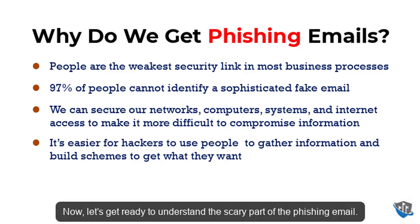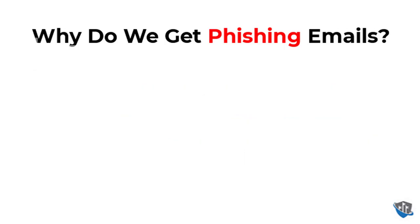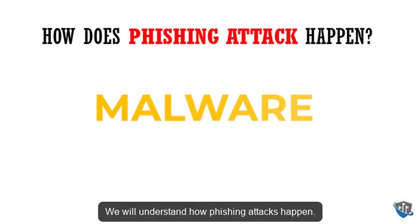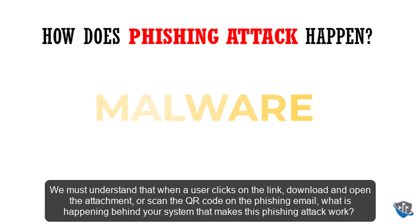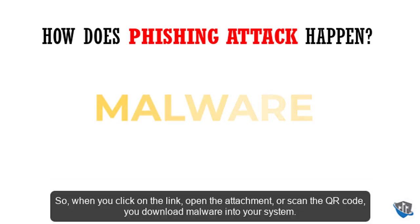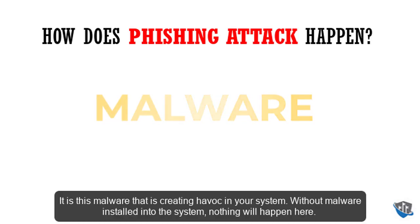Now let's understand the scary part of phishing email — how phishing attacks happen. When a user clicks on a link, downloads and opens an attachment, or scans a QR code on a phishing email, malware is downloaded into your system. It is this malware that creates havoc in your system; without malware being installed, nothing will happen.